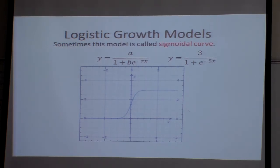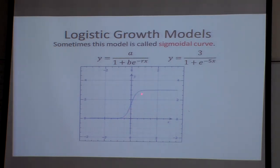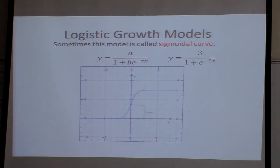I talked about this briefly, kind of like a deer population. How it starts out small, it will grow, but then the resources can only support so much food. That's an example of how this would work. You have growth, and you have good growth, and then it starts to level off. That's what the growth model looks like.